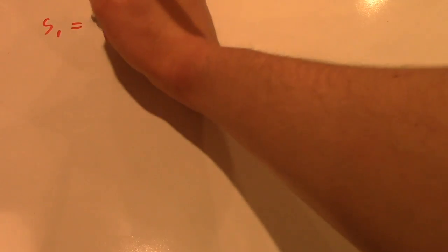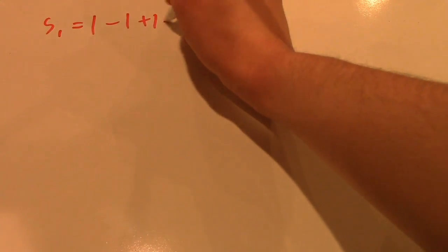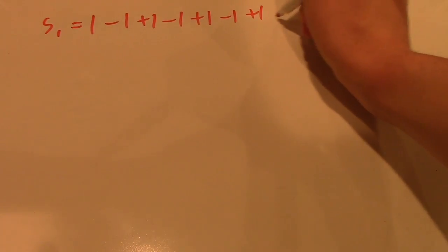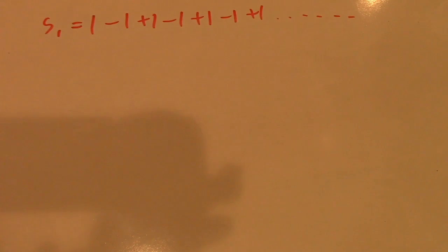Now, calculating the answer to this sum actually involves using two other sums. The first of these, which we will call S1, is equal to 1 minus 1 plus 1 minus 1 plus 1, and so on, off to infinity.